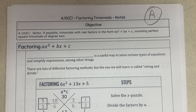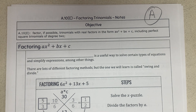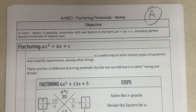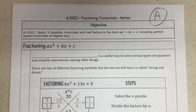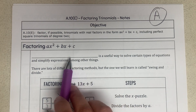These are not normal numbers that divide easily — they need to be written with x, which is why we call it factoring. If you're in the A group, you are working with the swing method, called 'swing and divide.' If you're in the B group, we are using the grouping method, which is a little more technical.